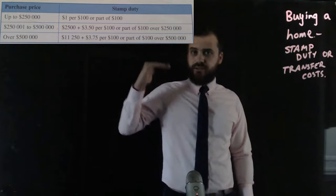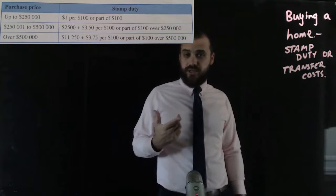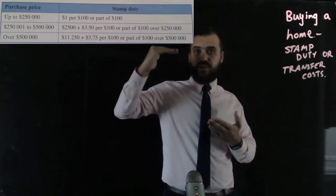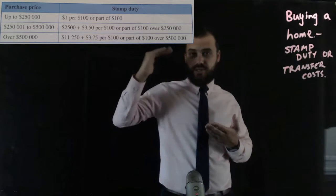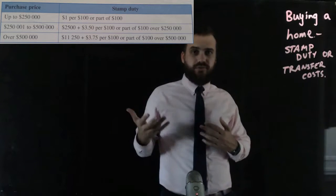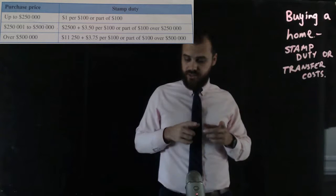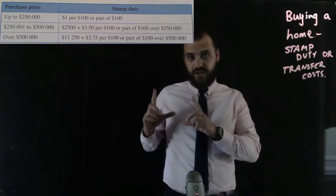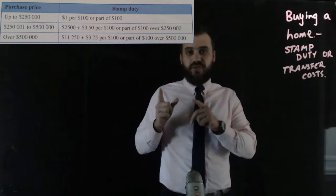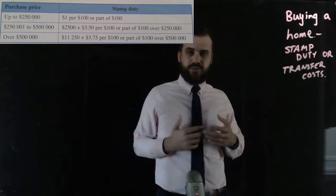It rounds everything up to the nearest hundred dollars. So if the house was five hundred dollars, you pay five dollars in stamp duty. But if the house was five hundred and twenty-three dollars, you'd pay six dollars — all the way up to six hundred dollars. From two hundred and fifty thousand and one to five hundred thousand dollars, your stamp duty is two thousand five hundred plus three dollars fifty per hundred or part of one hundred.